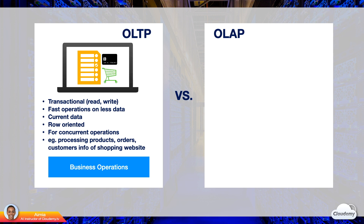For example, you have an online shopping site. You might use an OLTP database to store products, orders, and customers' information. Operations like adding new products, updating customer information, and processing orders are online transactional processes, because these operations are performed frequently on a small amount of data.